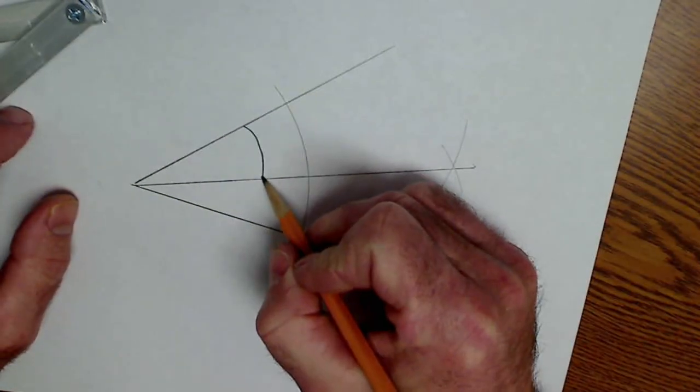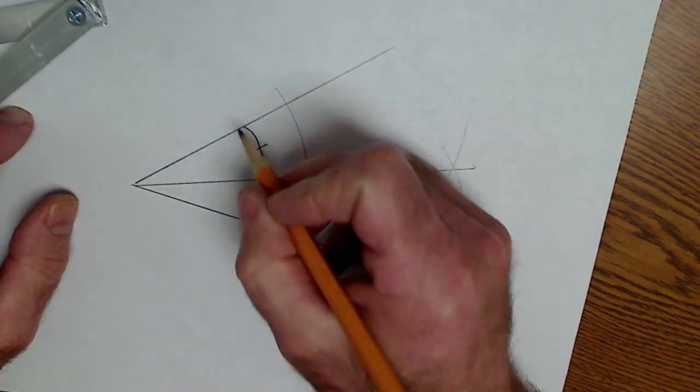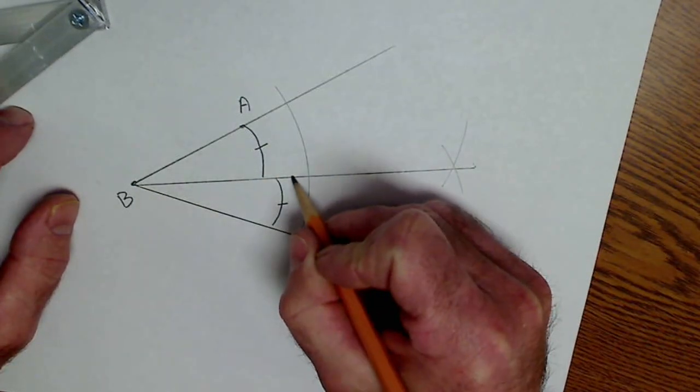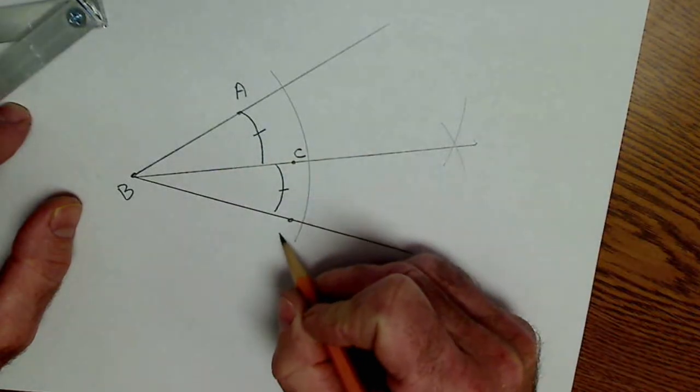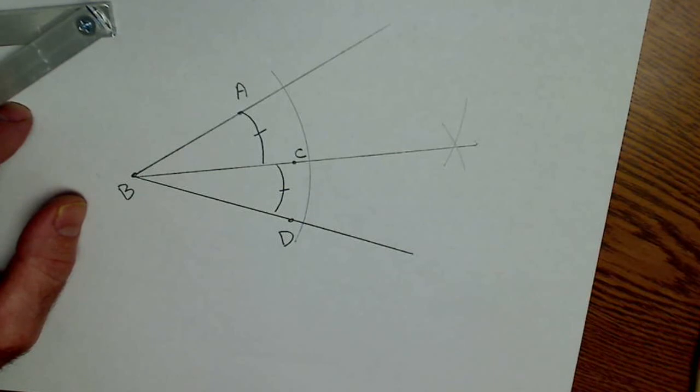So this angle here is congruent to this angle here. Or if I have points on it, angle ABC is congruent to angle CBD. A lot of constructions. We'll just start with those for now.